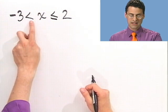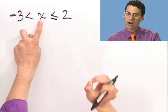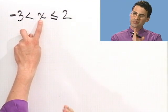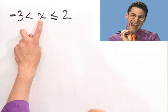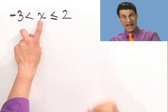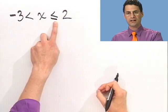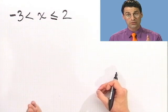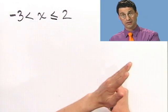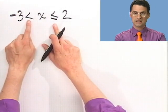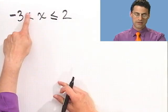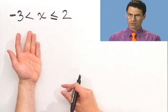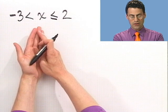You see, what this means is that x is not allowed to be negative 3. That is off limits. You can be as close to negative 3 as you want as long as you're always just a hair bigger. But you can't be negative 3. But with this symbol here, this means that x is allowed to migrate all the way up to 2. You can be as big as 2. But you can't be any bigger.